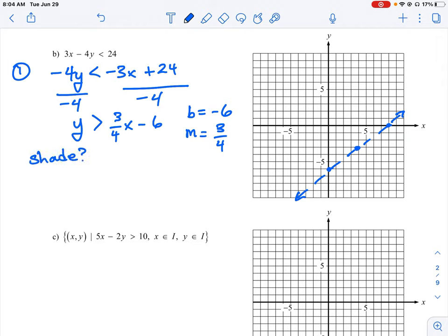Okay, so what is the shading rule? So let's change color here. We know we have a greater than symbol here. So this is a greater than. This means we are going to shade above—above the line.